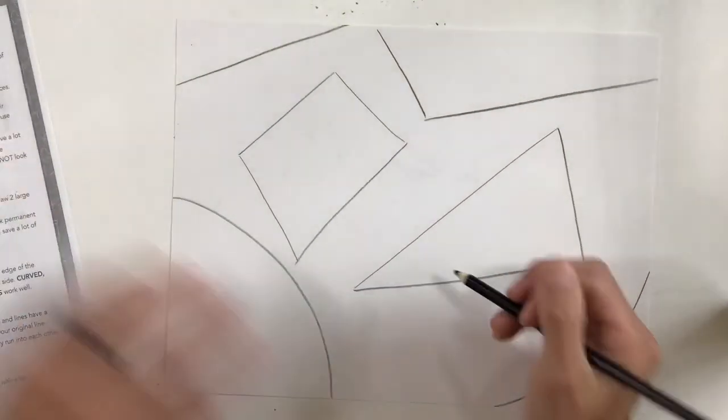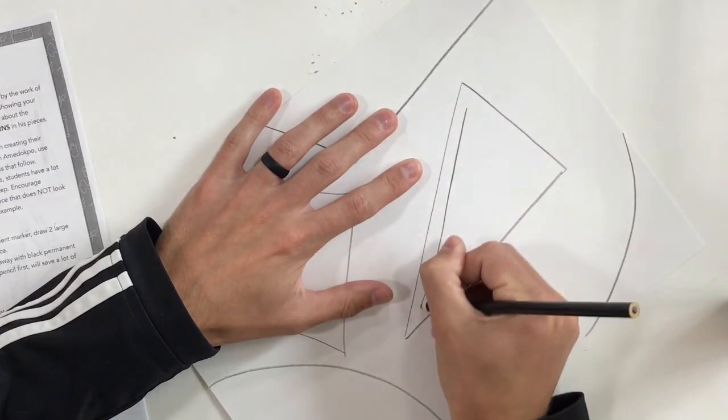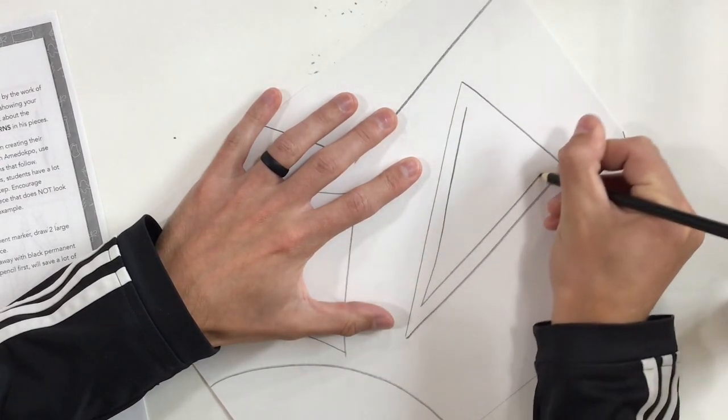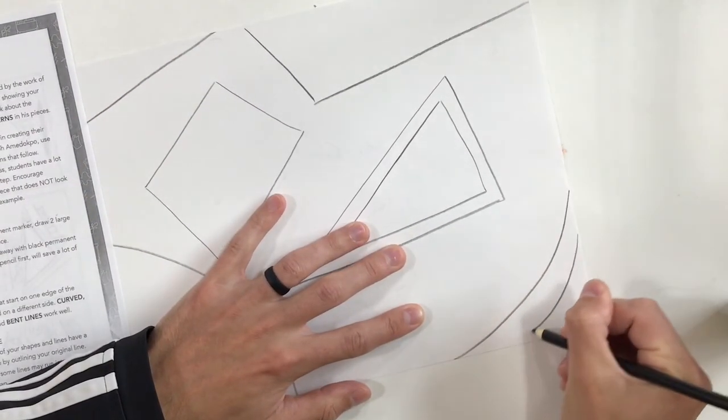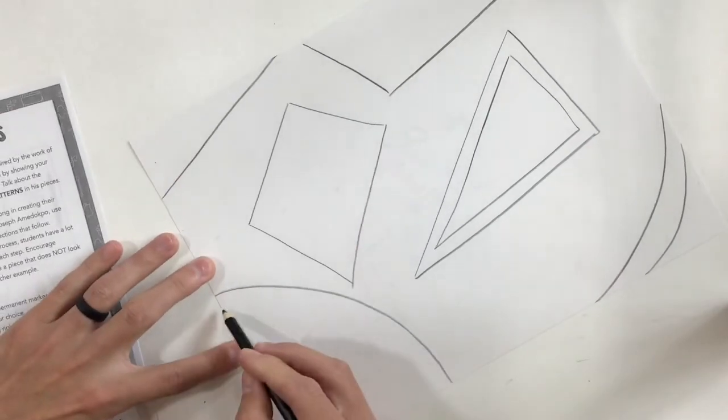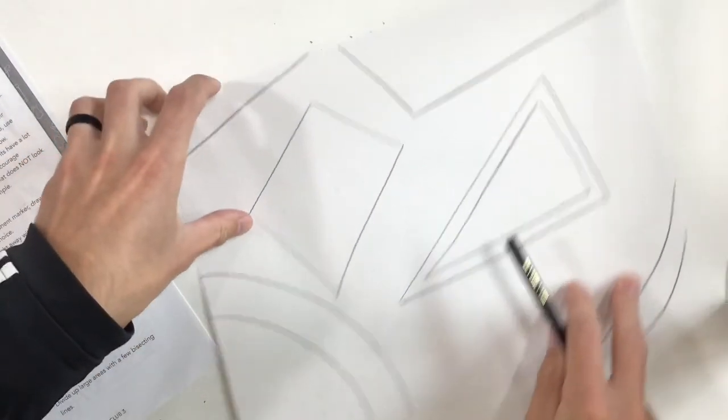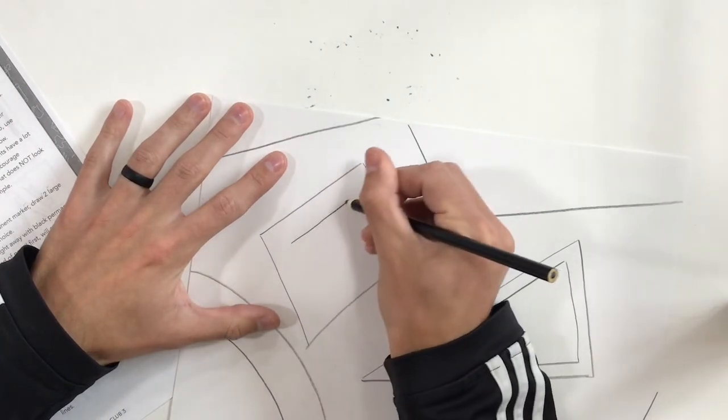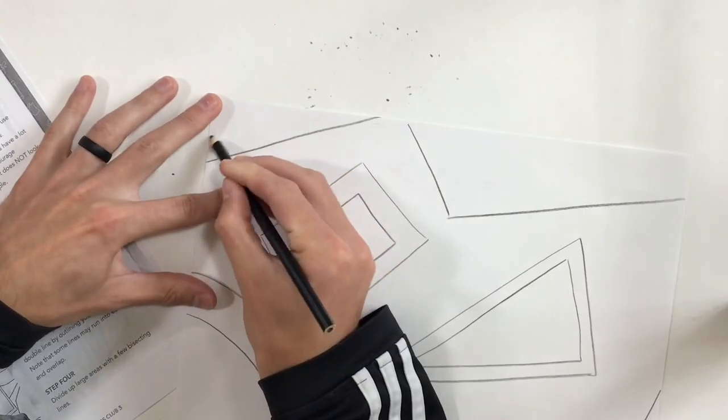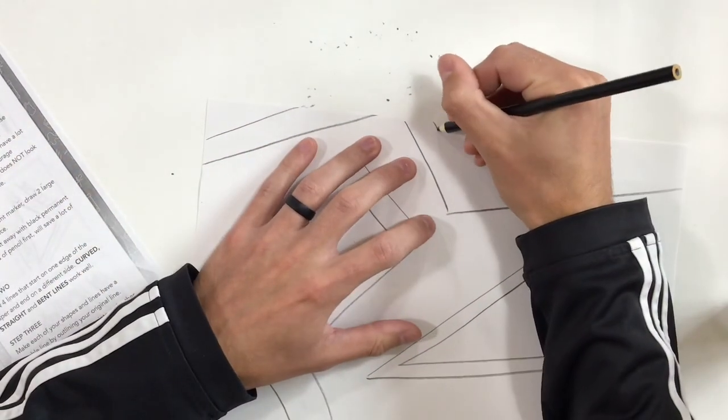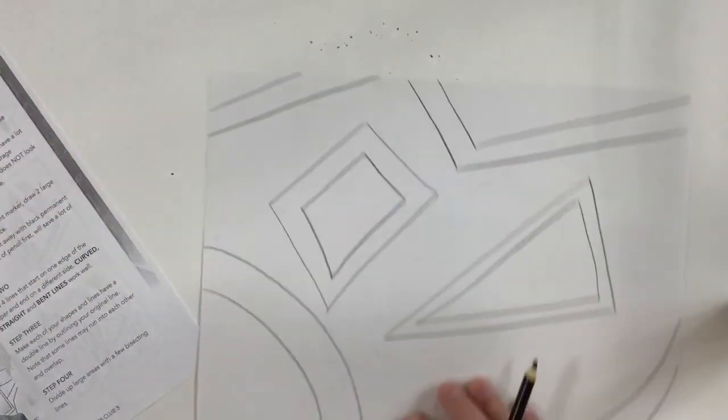So I'm going to do that with each one of my shapes. So that means I'm doing another triangle, do another one of these curves, do another diamond shape. So I doubled everything.